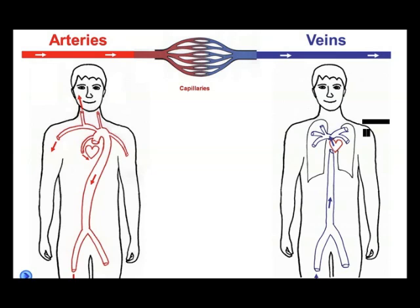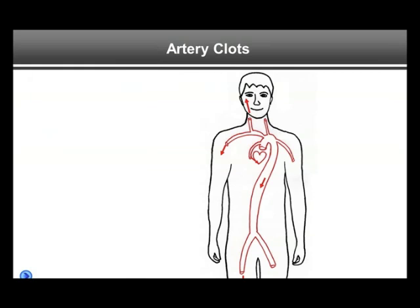A brief note on anatomy. We are not talking much about arterial blood clots today; we'll focus on vein clots. But to get the terminology right: arteries are the blood vessels that carry blood away from the heart into the extremities and inner organs, and veins are the blood vessels that slowly lead blood back to the heart.